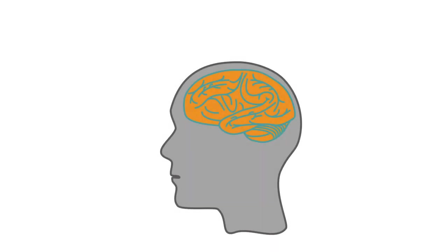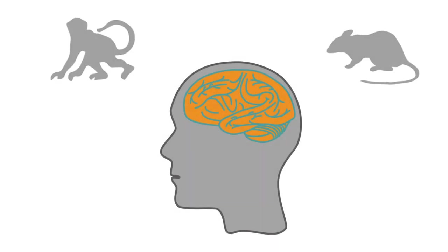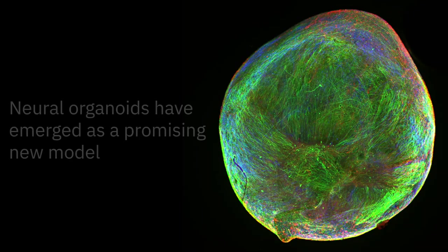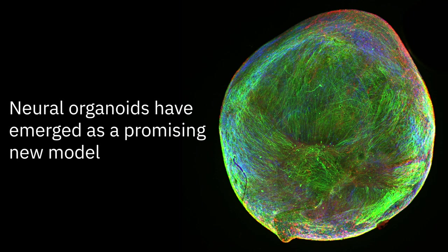Studying the human brain in vitro is challenging. Scientists have up until now relied on animal models like mice and monkeys, but they are an imperfect representation of the human brain. Recently, neural organoids, also known as mini-brains, have emerged as a promising new model.